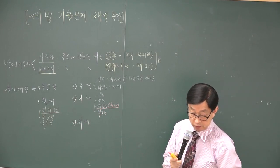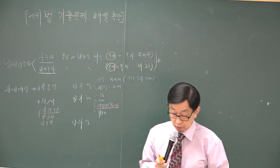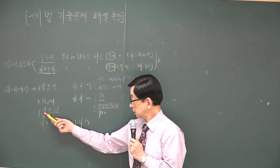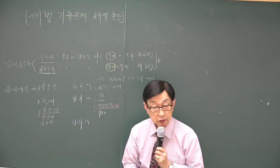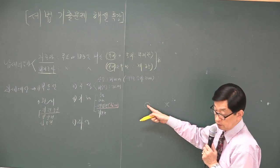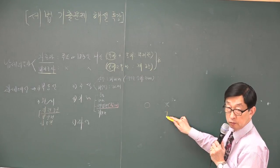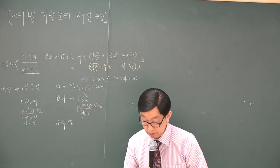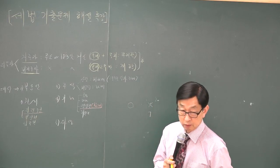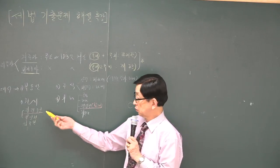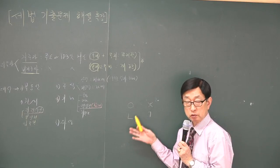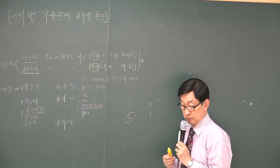2번 문제 한번 보세요. 과세 대상을 모두 골라보세요. ㄱ은 지역권이라 지상권이 아니므로 과세 대상 아닙니다. 기역이 들어가 있는 1번, 4번, 5번은 탈락. ㄴ을 보면 등기된 부동산이 있으니 과세 대상이 맞습니다. 답이 나왔습니다 - ㄴ. 이런 식으로 풀어야 쉽습니다. 정답 2번.